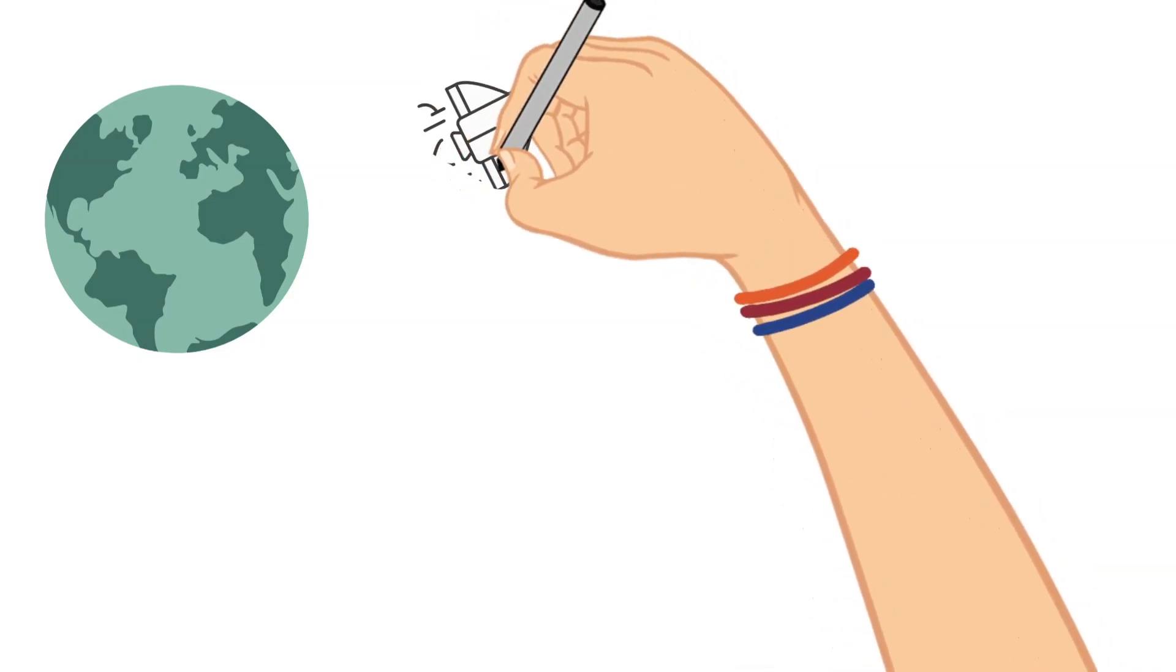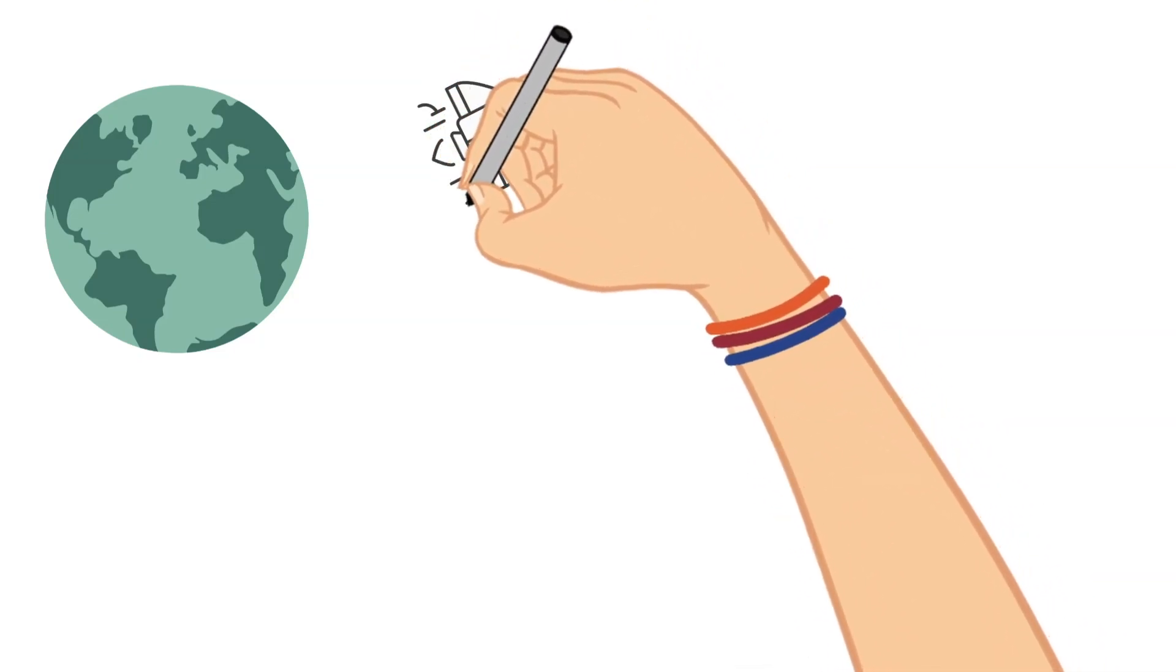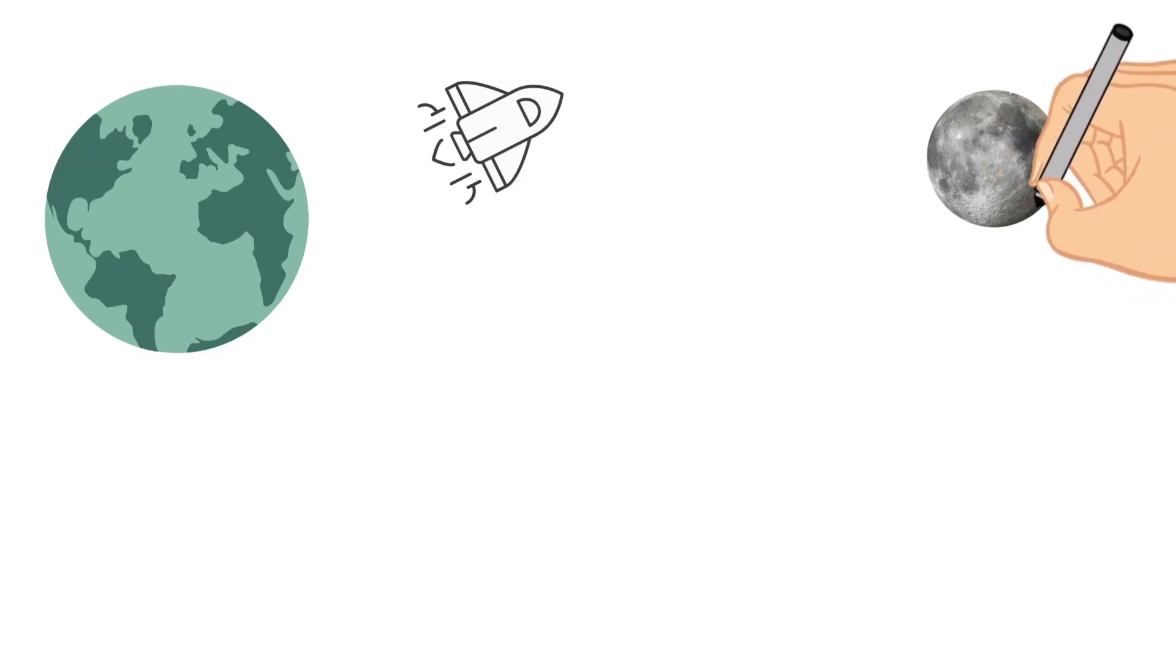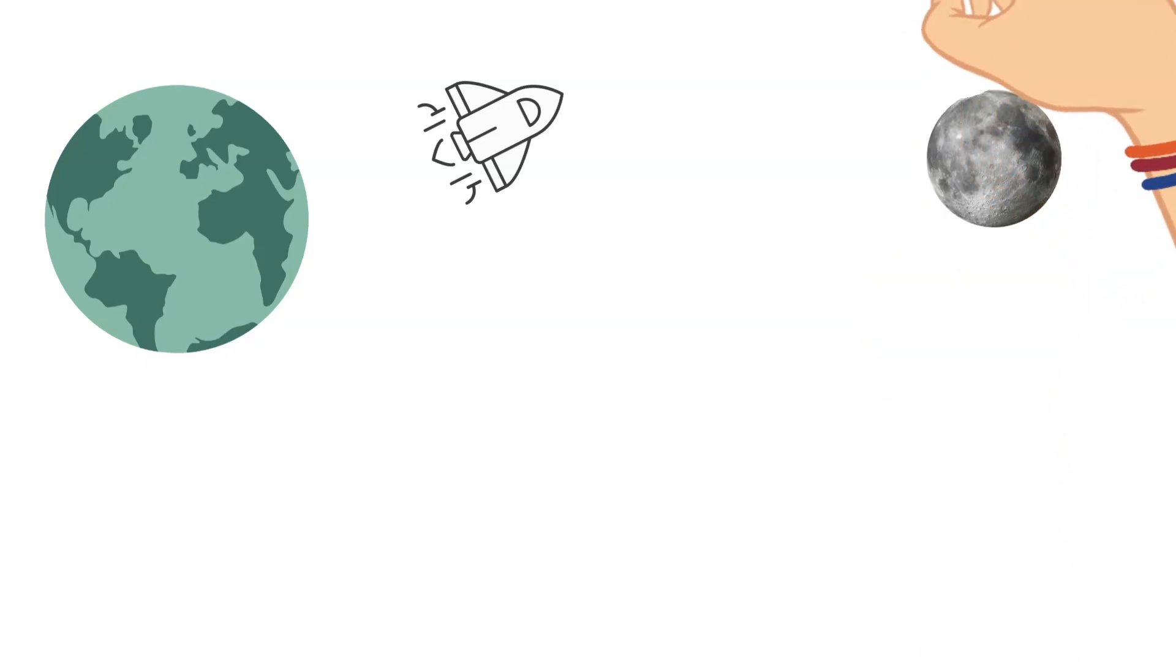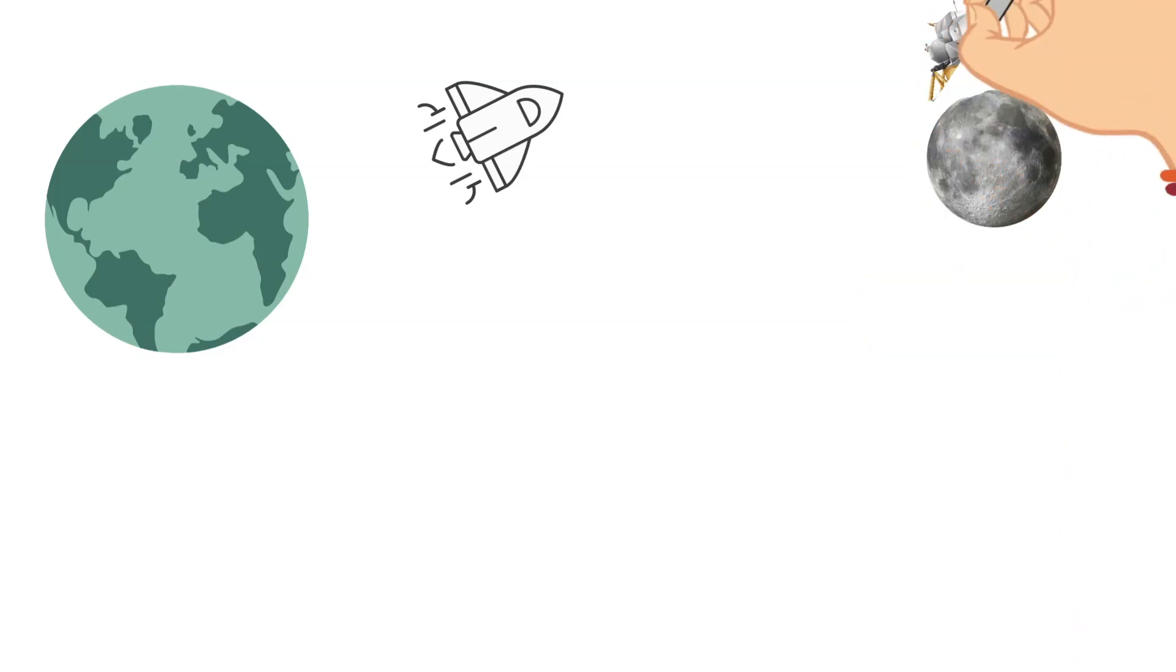The very next day on July 20 at 1:46 PM, Neil Armstrong and Buzz Aldrin separated from the command module in the lunar module. And two hours later, it began its descent down toward the moon's surface. Later on that afternoon, the craft touched down on the moon.